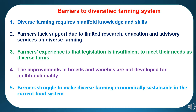The second barrier is that farmers lack support due to limited research, education and advisory services on diverse farming. Farmers' experience was that agricultural advisors are specialized in specific streams of production and therefore were less competent in advising farms with mixed production. As a result, the farmers said that they lacked advisory services that take into account the interplay, possibilities and restraints within a diverse farm, and also faced higher costs from having a diverse range of activities.